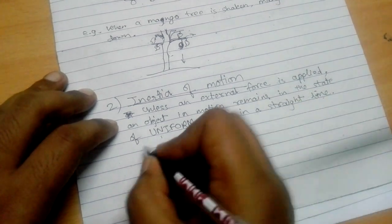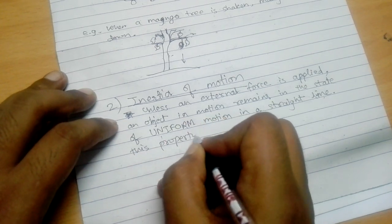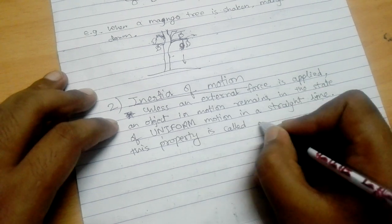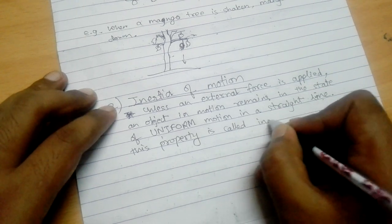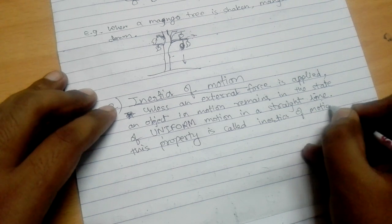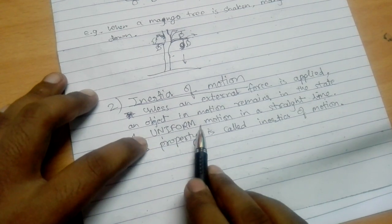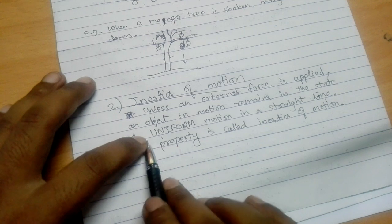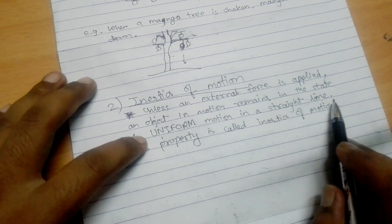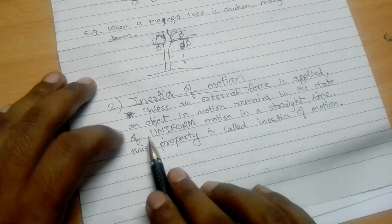Even after switching off the fan, the blades have inertia of motion and keep on rotating for some time. If there were no friction, the blades would never stop rotating — it is because of friction that the blades stop. Likewise, if you are driving a car and there were no frictional force, once you start the engine and the car moves, turning off the engine would not stop the car unless you hit the brake.